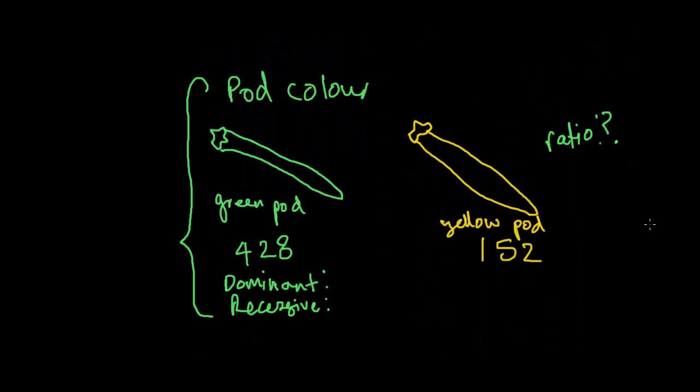So lastly, we've got pod color. Mind my really bad drawings, these are supposed to be pea pods, but they might as well look like chillies. Anyways, we've got the green pod and we've got the yellow pod. For the green pod you've got 428, for the yellow you have 152. So we need to figure out what the dominant and recessive trait is.